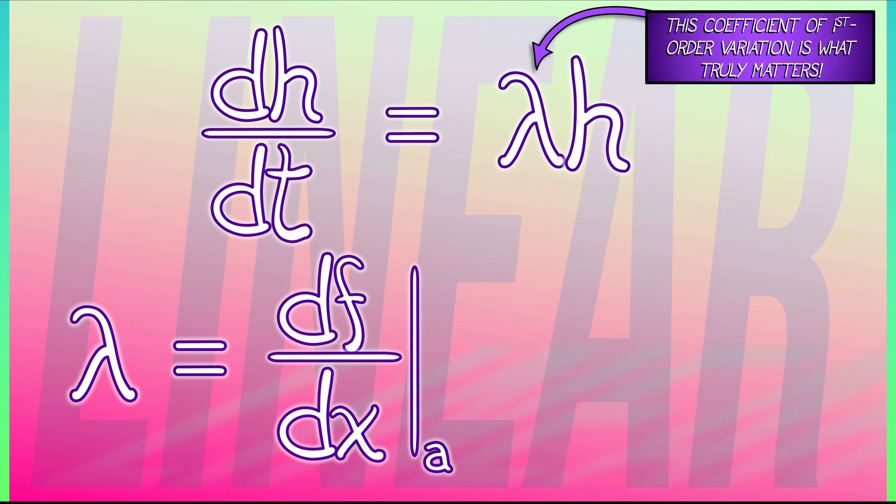It's of the form dh/dt equals some constant lambda times h. That constant, that coefficient of first order variation, that's the thing that really matters. Because that gives you the solution nearby.